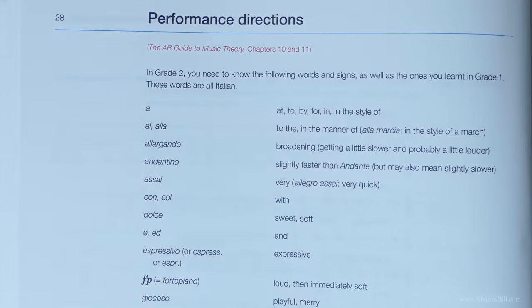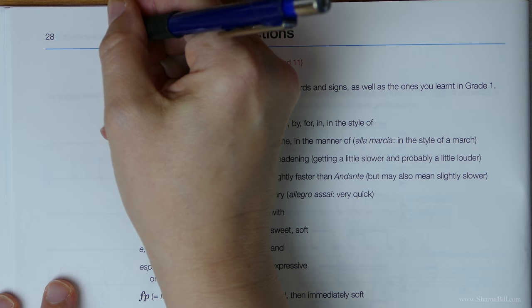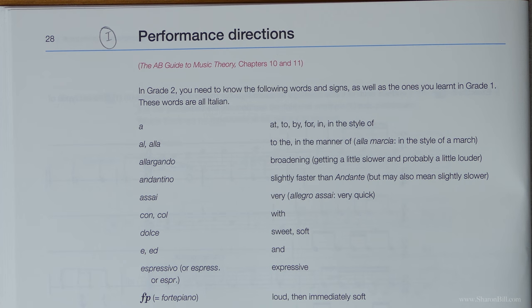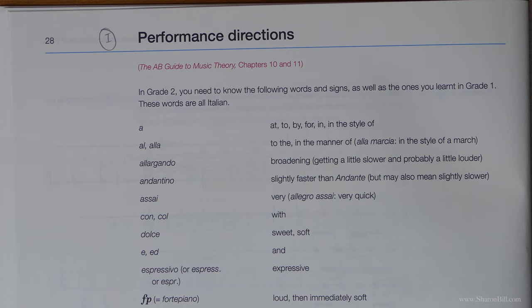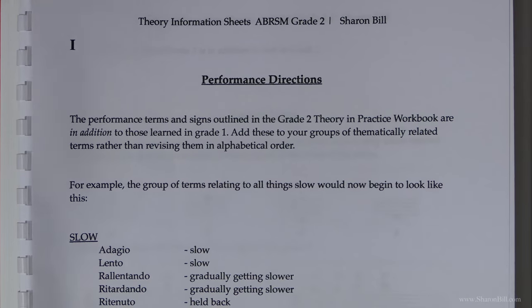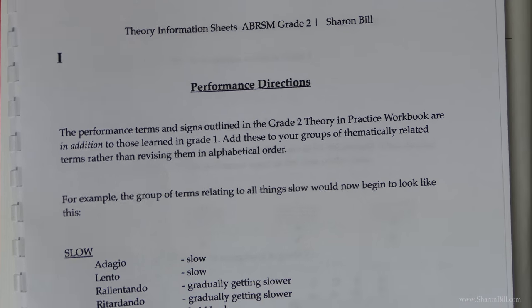If you turn in your workbook to page 28, we're looking at performance directions. I'll call this section I, and you can turn in your PDF document to the Grade 2 PDF section I. There are also a few little ideas there to help you.